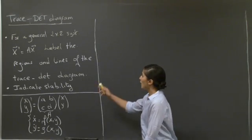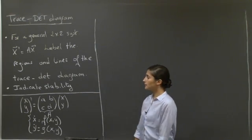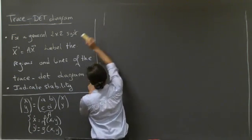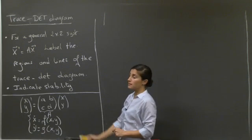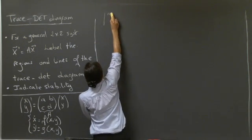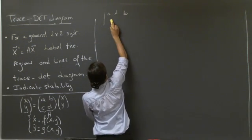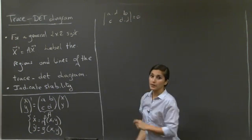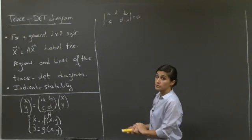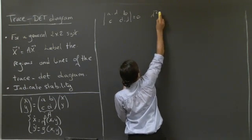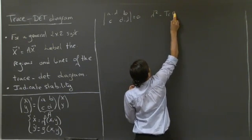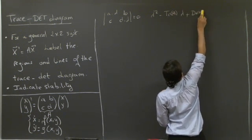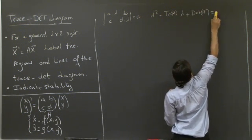Welcome back. Let's remind ourselves where this trace-determinant diagram comes from. To solve this system, we need to find the eigenvalues of the matrix A. The eigenvalues are solutions of the characteristic equation, which can be written in the form λ² - (trace)λ + det(A) = 0.